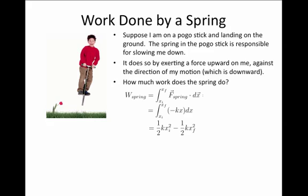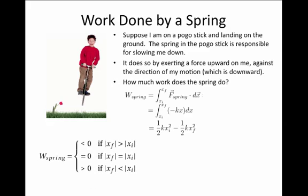We notice that the work done by the spring can be positive or negative or zero. In fact, there are three cases. The work done by the spring will be negative if the final x is greater in magnitude than the initial x, in other words, in absolute value.